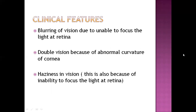Clinical features of this disease include, first of all, blurring of vision due to inability to focus light at the retina. Double vision, also called diplopia, occurs because of abnormal curvature of the cornea. Haziness in vision, similar to blurred vision, is also caused by the inability to focus light at the retina.